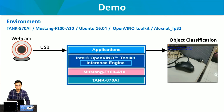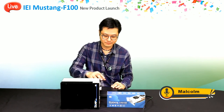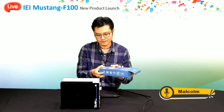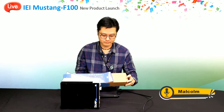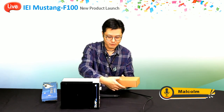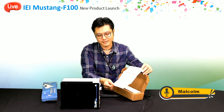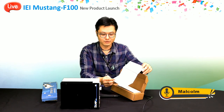Here is our quick demo. The environment includes the TANK-870AI, the Mustang F100-A10, and our OS is Ubuntu 16.04. We use an OpenVINO Toolkit example with the AlexNet topology to do the object classification task. Here is the box of the Mustang F100-A10. Let's open it. After opening it, you can see the quick installation guide showing how to change the bracket and how to install your acceleration card into your system.